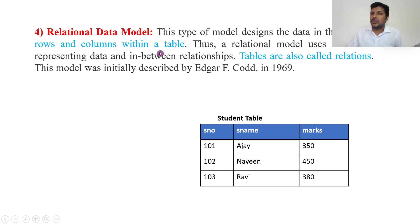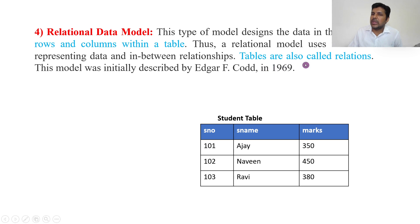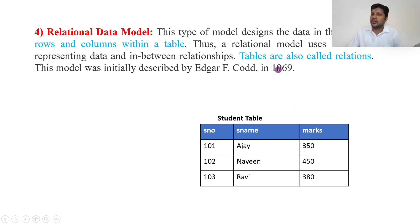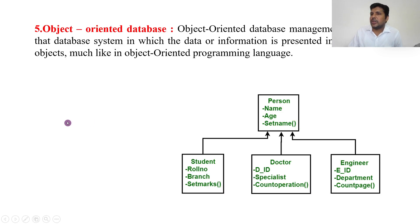The relational model represents data in the form of rows and columns within a table. Tables are also called relations — that is why it is called the relational model. This model was initially described by Edgar F. Codd in 1969.